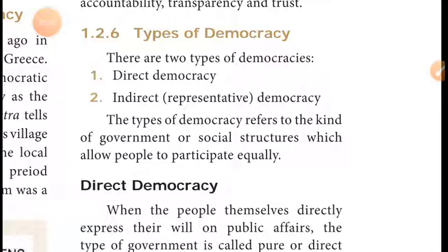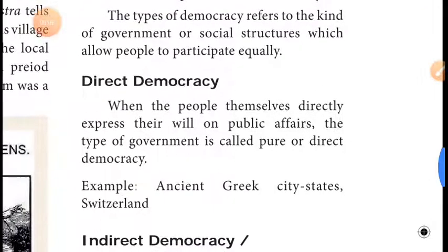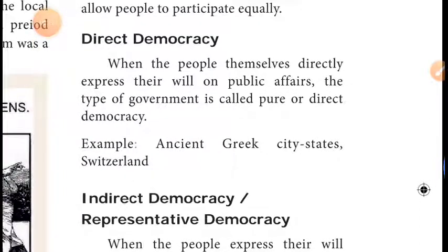The types of democracy refer to the kind of government and social structure in which all people participate equally. There are two types of democracy: direct democracy and indirect democracy. Now we will discuss each one.